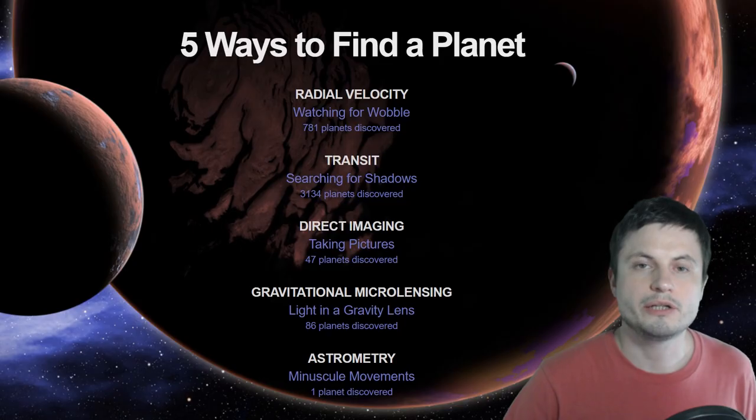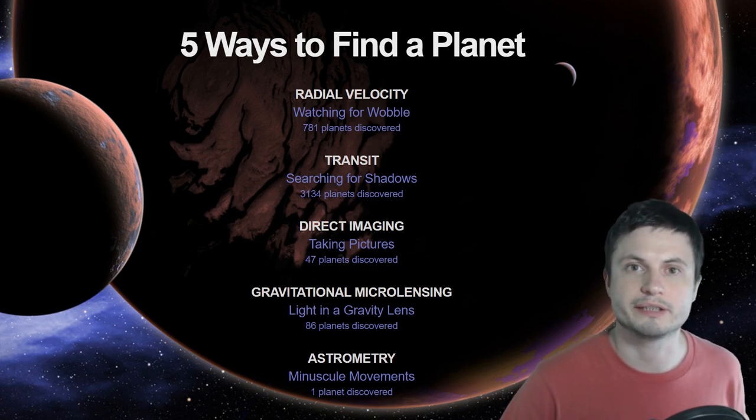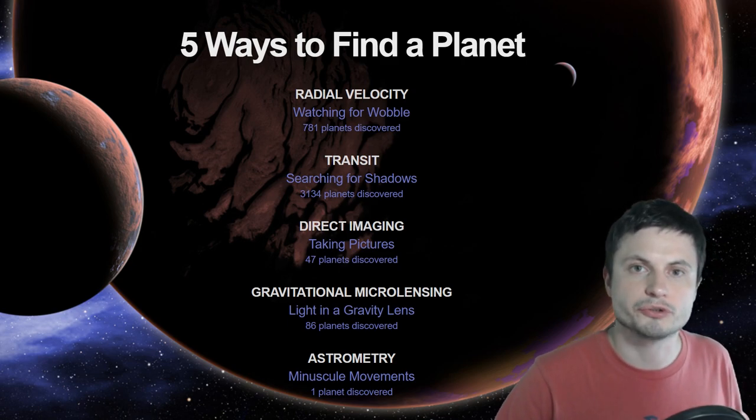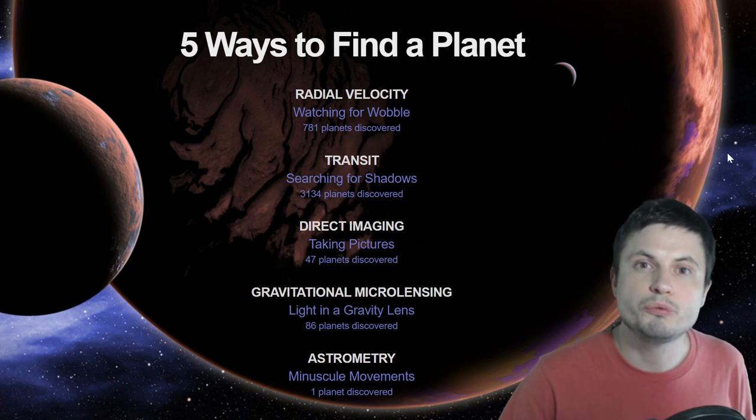Before I explain it to you, here are the five major techniques that we often use to find exoplanets. This is how we've discovered pretty much most of the planets outside of our own solar system, and as you can see the direct observation or radial velocity or by seeing a planet transit in front of the star are the two major methods.